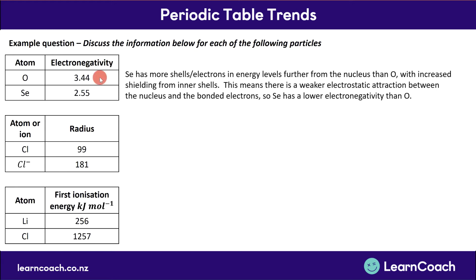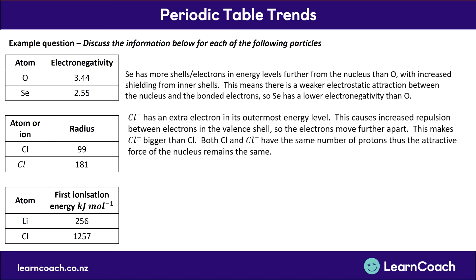Let's look at another one: Cl versus Cl⁻. We notice that Cl⁻ is much larger than Cl. Cl⁻ has an extra electron in its outermost energy level. This causes increased repulsion between electrons in the valence shell, so the electrons move farther apart, making Cl⁻ bigger than Cl. Both Cl and Cl⁻ have the same number of protons, and thus the attractive force of the nucleus remains the same.